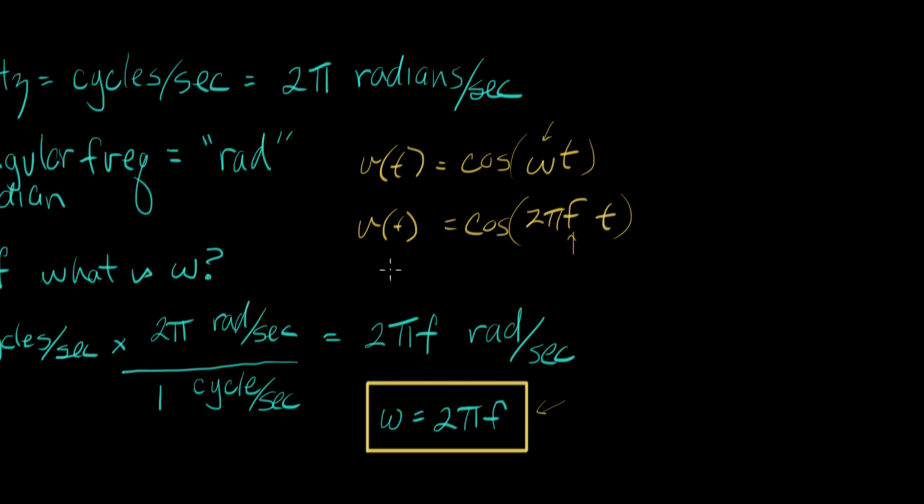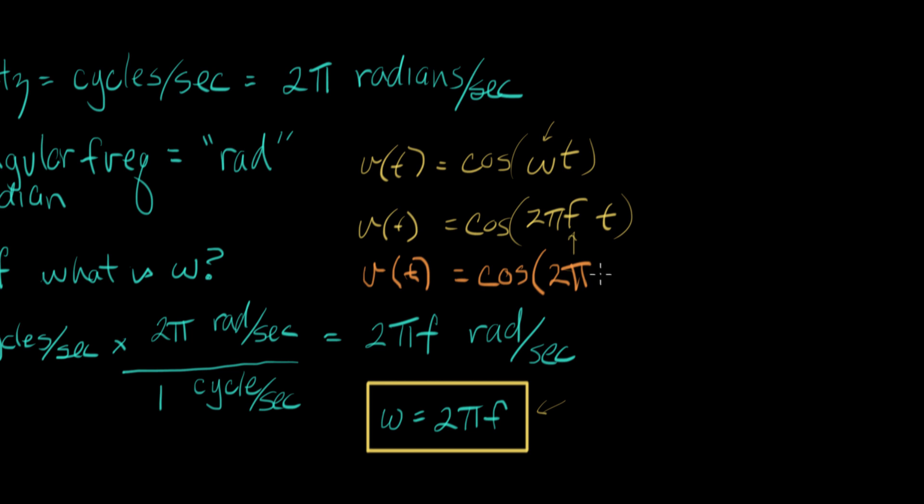So if we take the example from earlier in the video, we had a signal that was 50 hertz or 50 cycles per second. So we would write that here like this. We'd say V of T equals cosine two pi F and F is 50 times T and that's the same as cosine of 100 pi T.